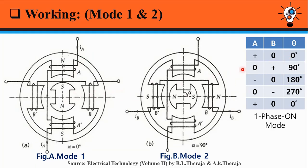During mode 2, phase A is not excited and phase B is excited with positive IB current. That is, current flows from B towards B', therefore north and south poles are created on the stator poles.